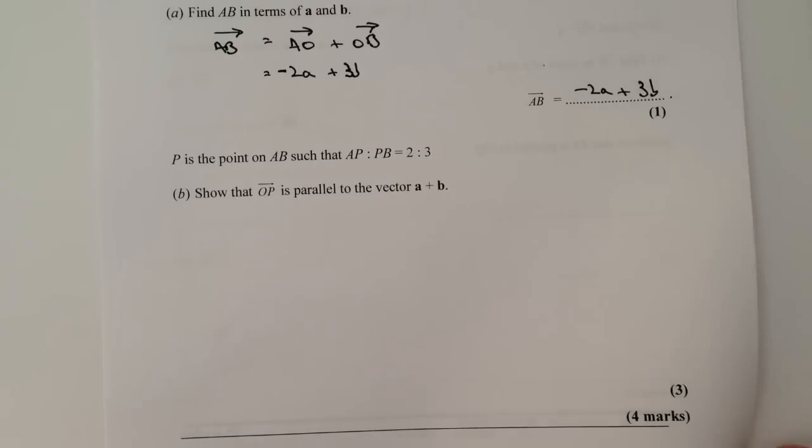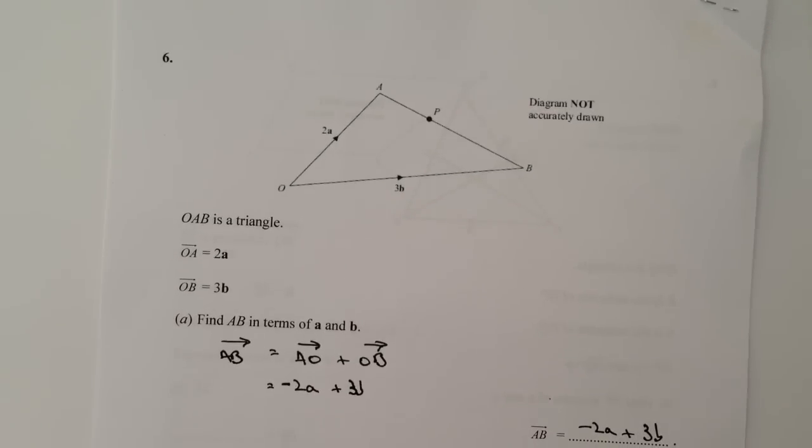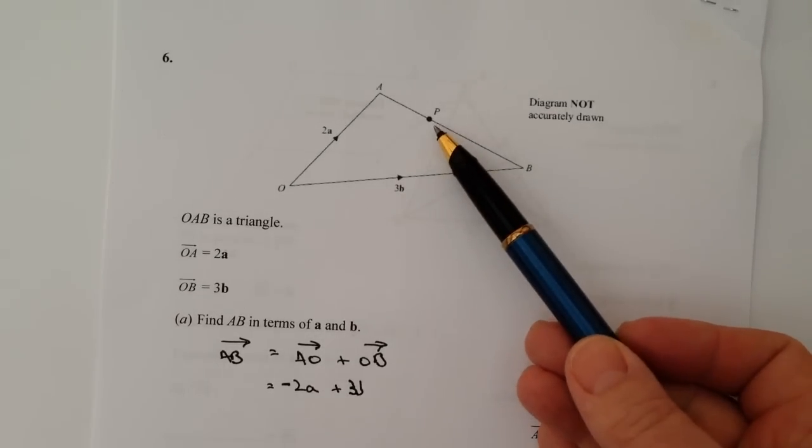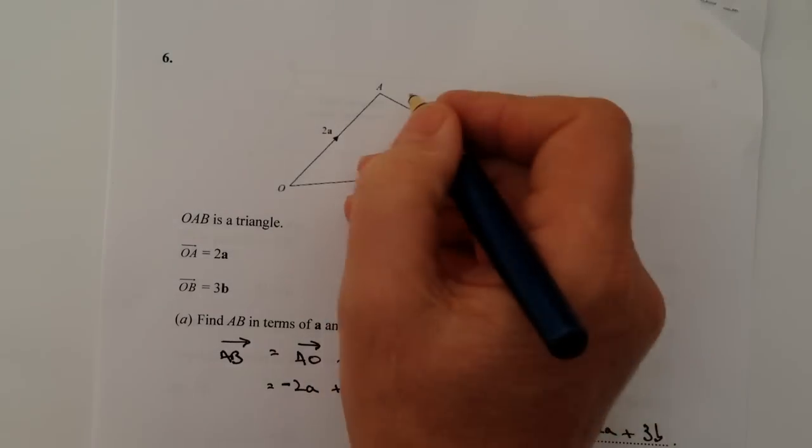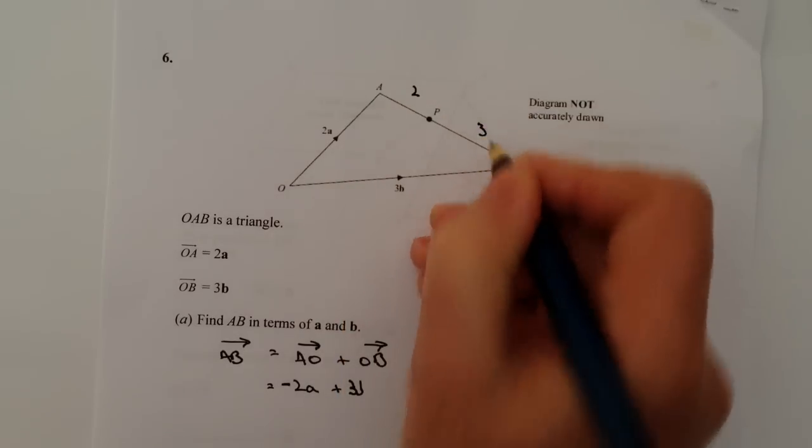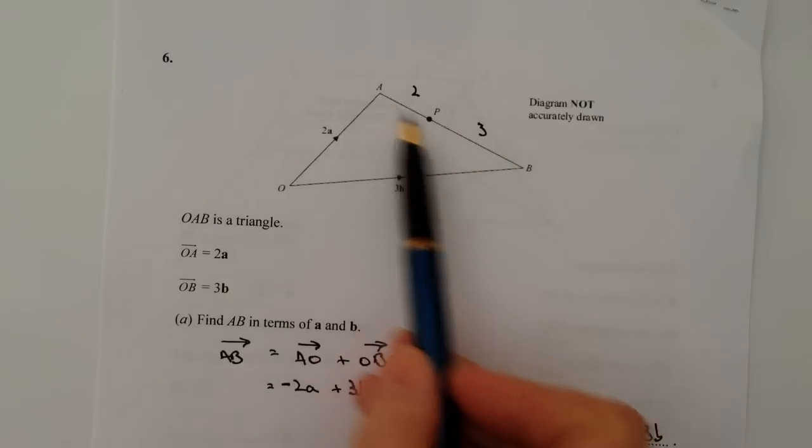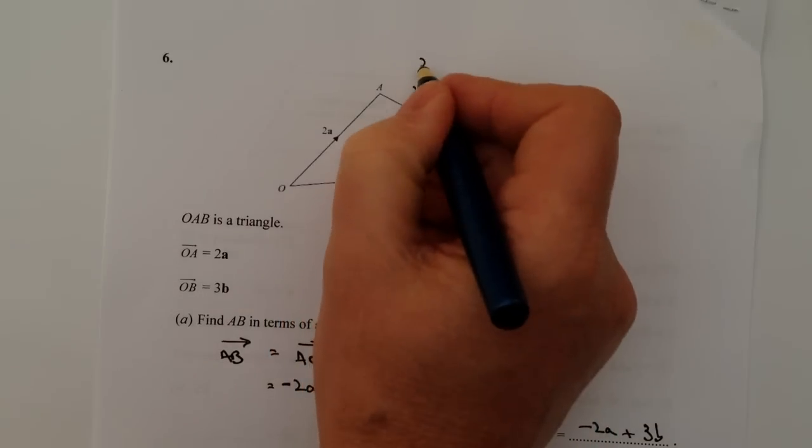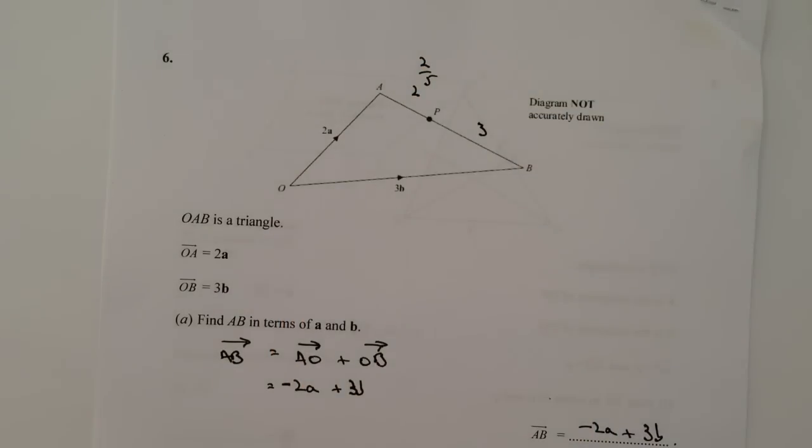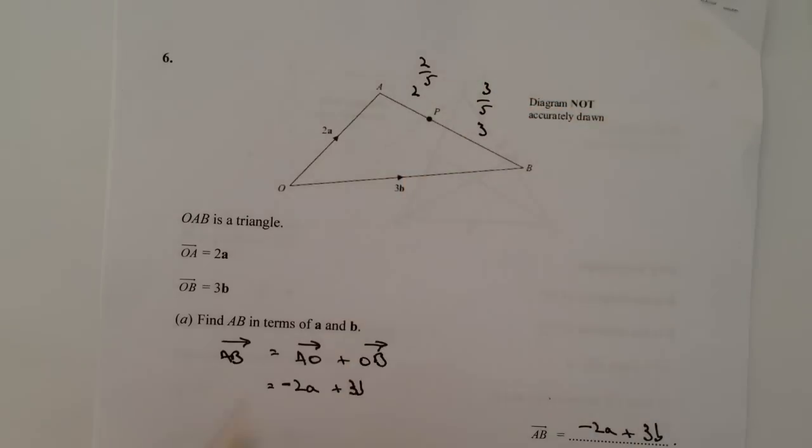OK, so let's have a look at that on the diagram itself. What we're saying is that P is a point here such that the ratio between AP and PB is 2 to 3. So if you like, there's five units here altogether. So AP is two fifths of the way along and PB is the remaining three fifths of the way along.